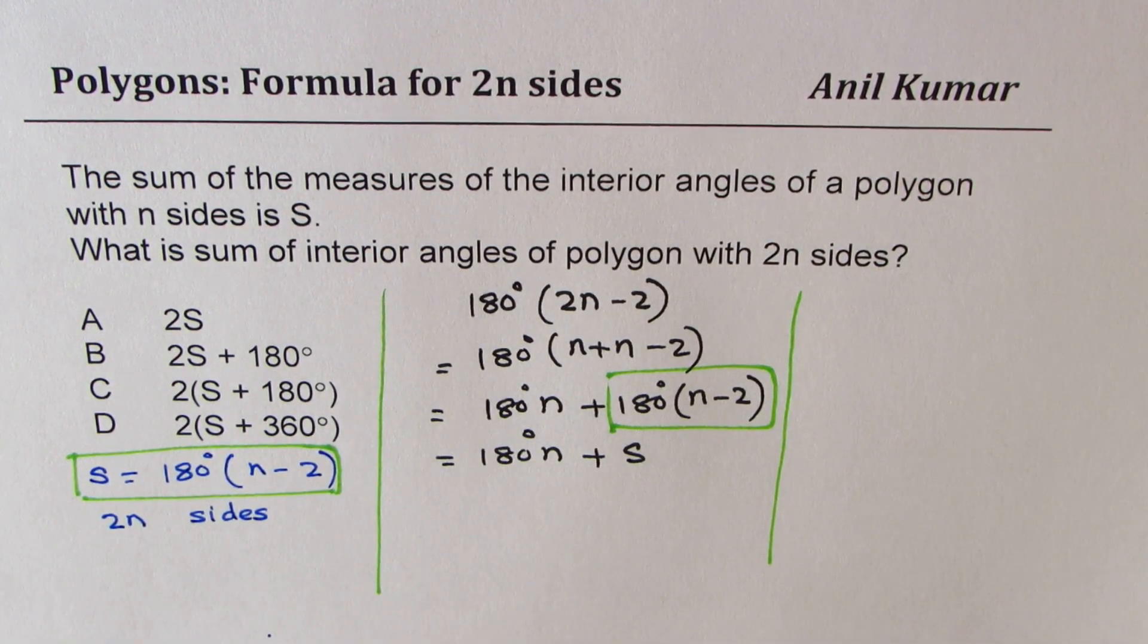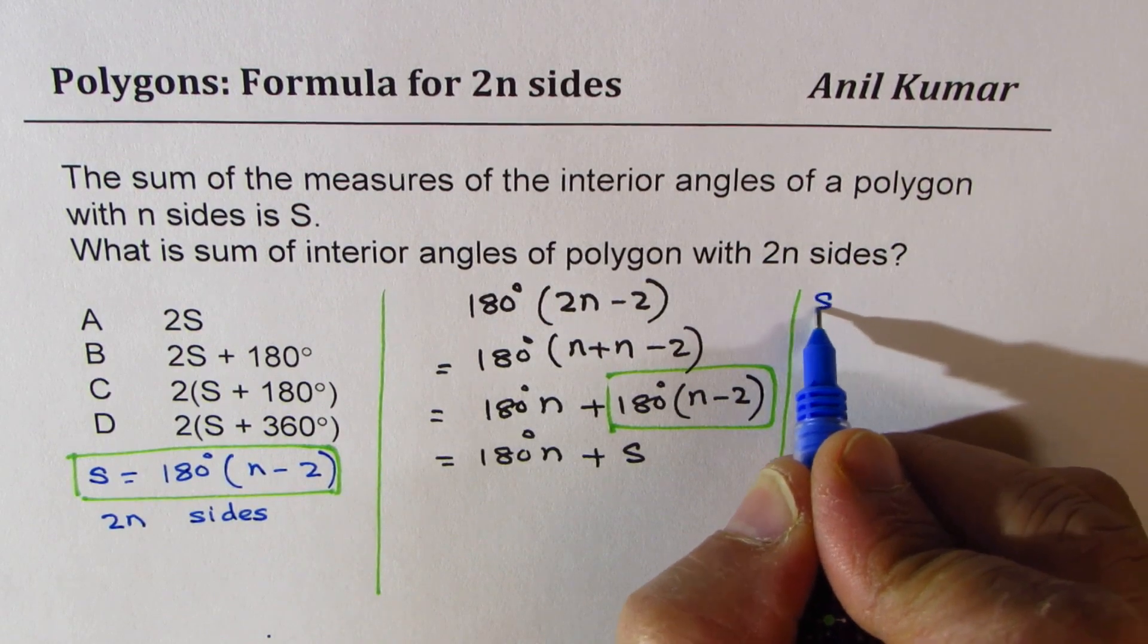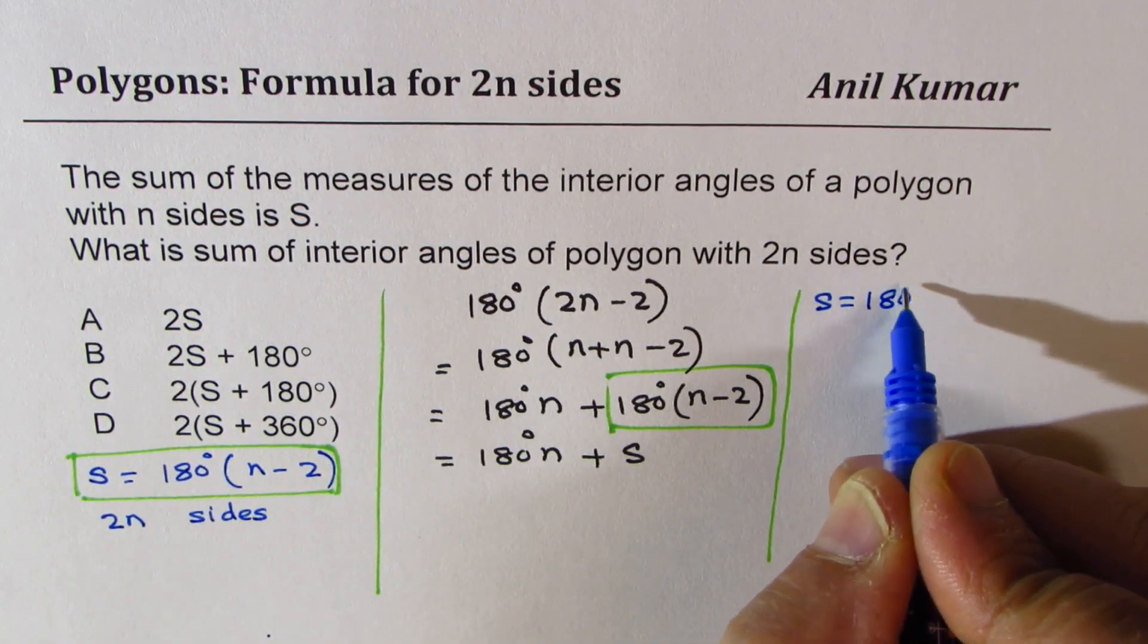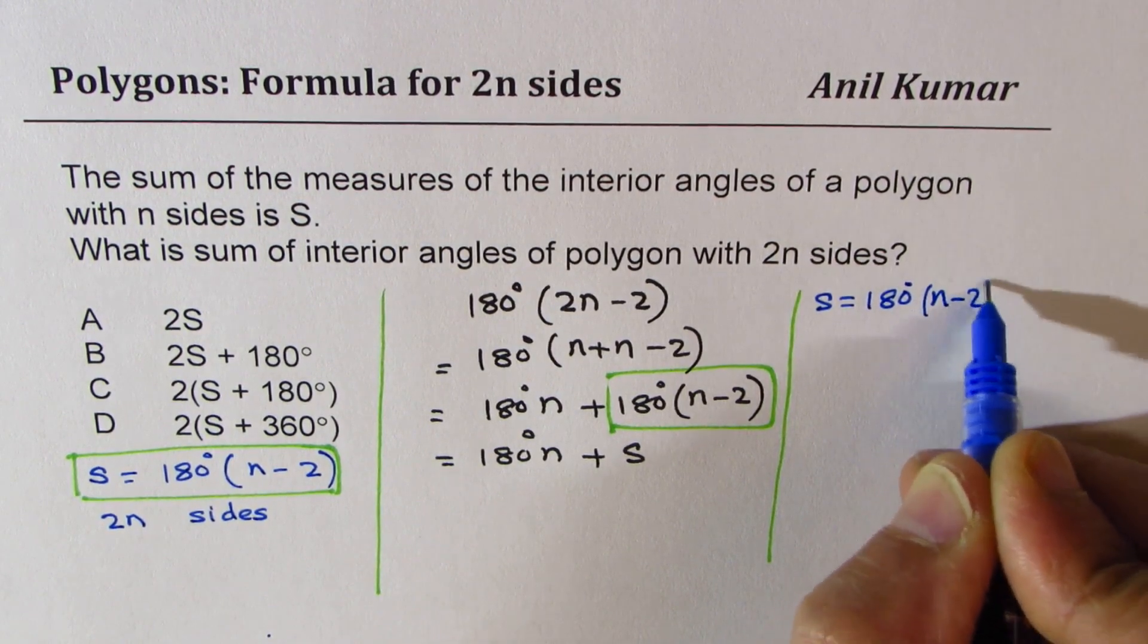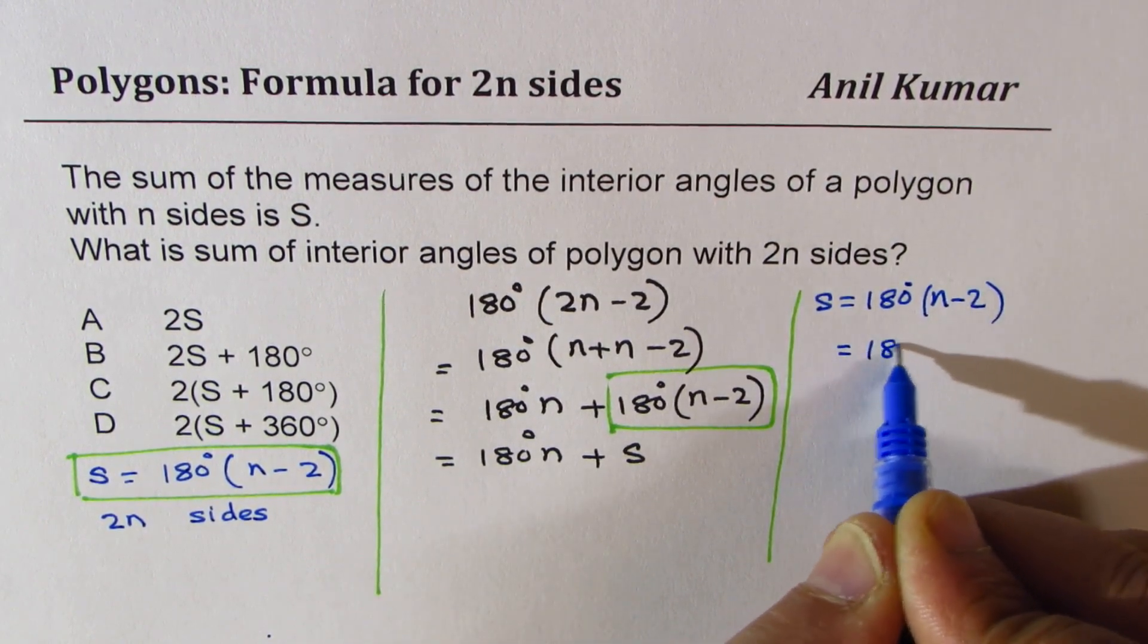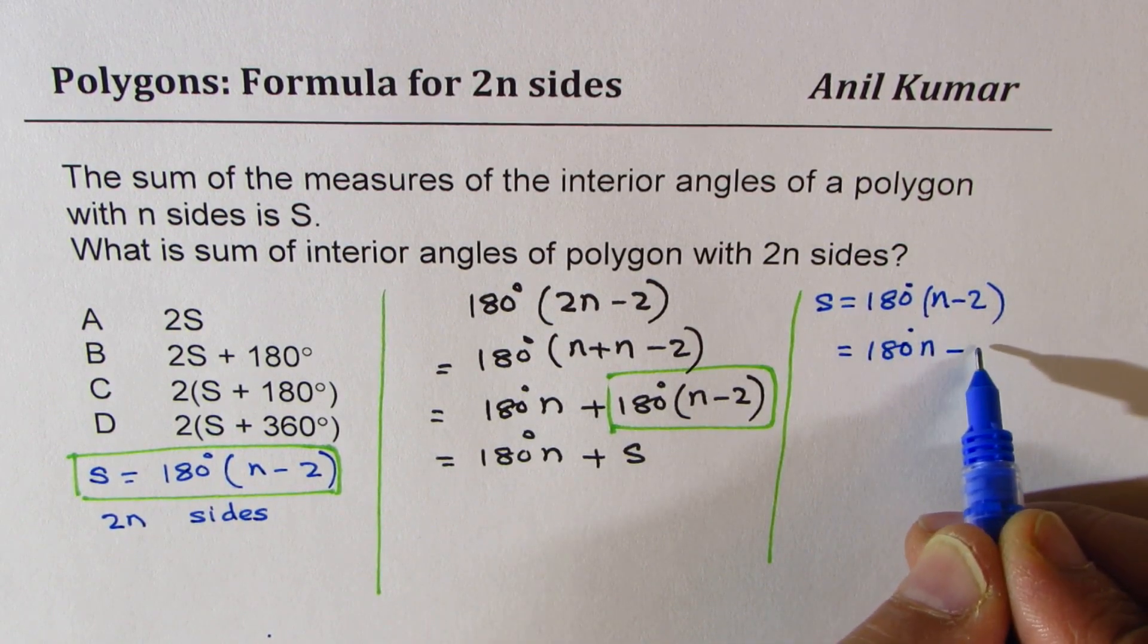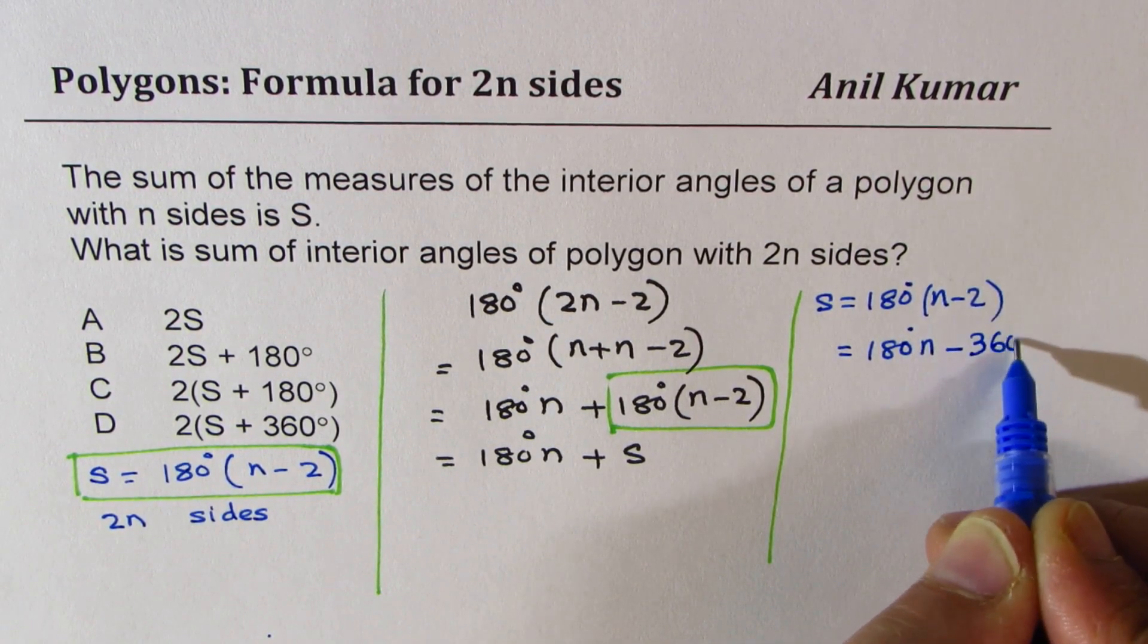Which is S is equal to, when you open this, you get 180, let me write first the formula, n minus 2. So when you open it, you get 180 degrees n minus 2 times 180, which is 360 degrees.